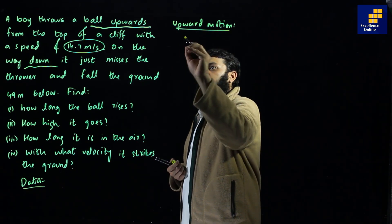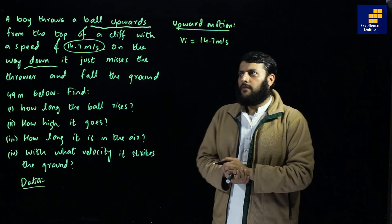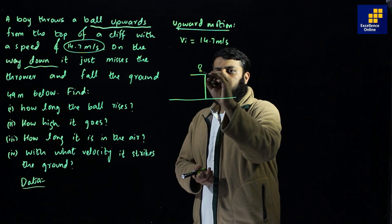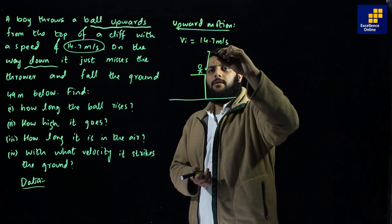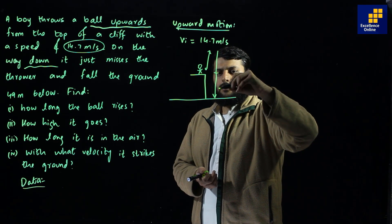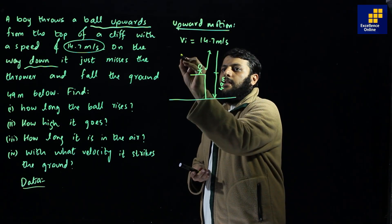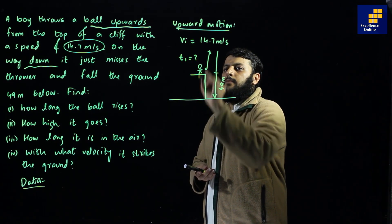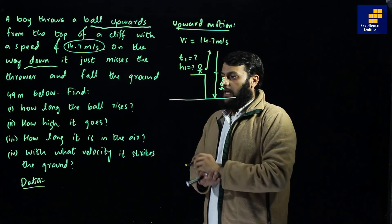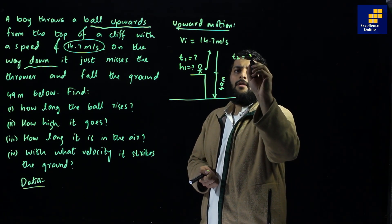For upward motion, the initial velocity vi is 14.7 meters per second. The cliff is represented in the diagram, and the boy throws the ball upward. On its way back down it misses the thrower and falls 49 meters below. We need to find: t1 (time rising), h1 (height reached), t2 (time for downward motion), total time, and final velocity vf.